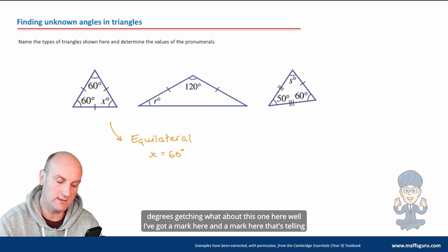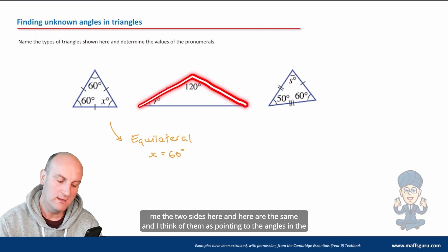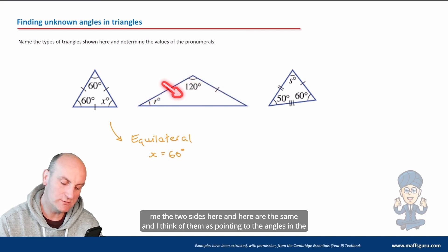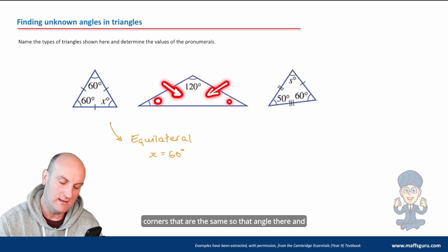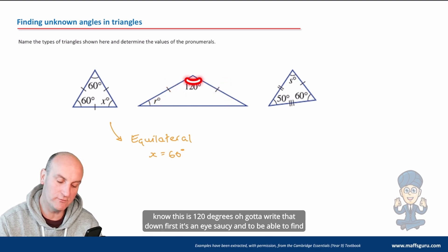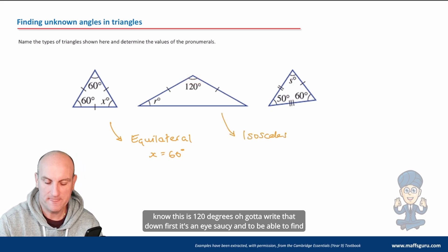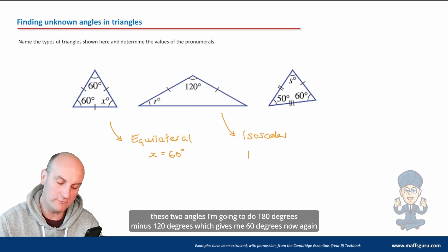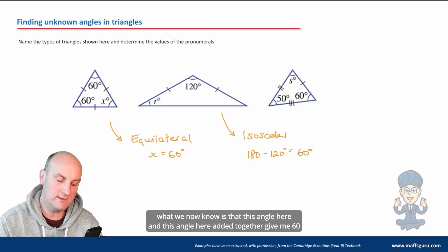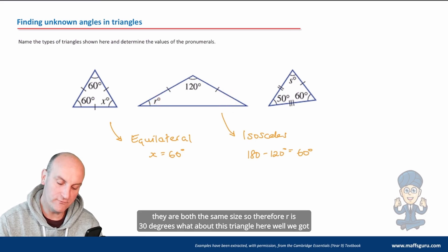What about this one here? Well I've got a mark here and a mark here, that's telling me the two sides here and here are the same, and I think of them as pointing to the angles in the corners that are the same. So that angle there and that angle there are the same. Well if we know this is 120 degrees, it's an isosceles. To be able to find these two angles I'm going to do 180 degrees minus 120 degrees, which gives me 60 degrees. Now what we know is that this angle here and this angle here added together give me 60. They are both the same size, so therefore r is 30 degrees.